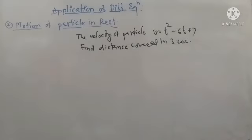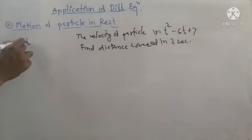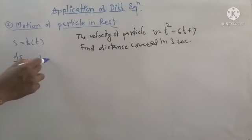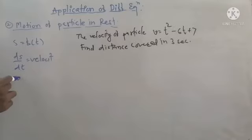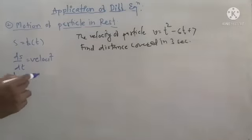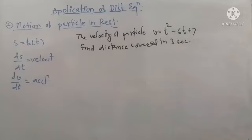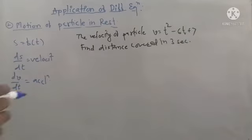For the motion of a particle, displacement is a function of time: s = f(t). The first-order derivative of displacement with respect to time is velocity v = ds/dt. The first-order derivative of velocity with respect to time is acceleration: dv/dt. So velocity is the rate of change of displacement, and acceleration is the rate of change of velocity.